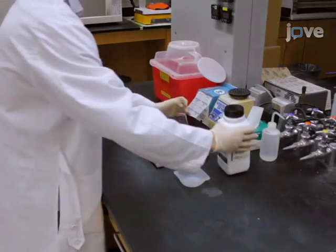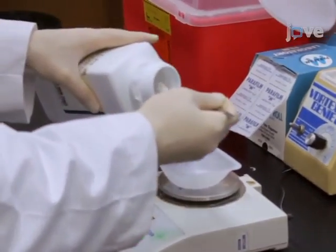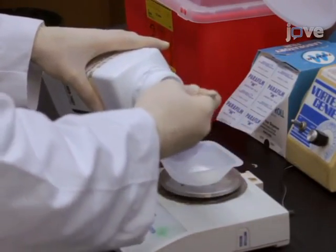Agarose gels are prepared using a weight over volume percentage solution. The concentration of agarose in a gel will depend on the sizes of the DNA fragments to be separated.